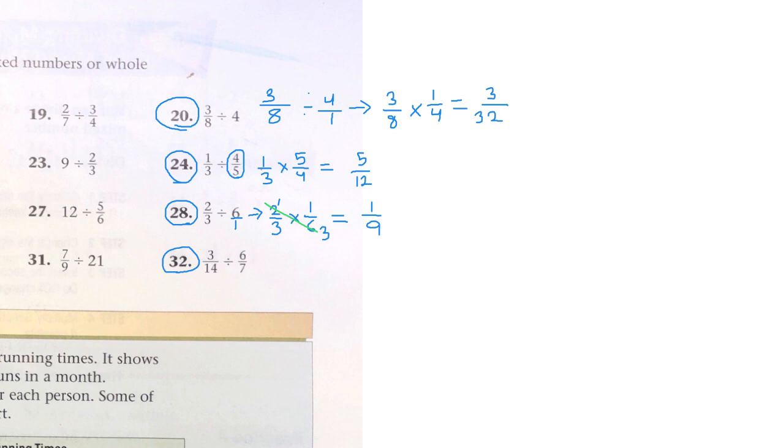One more. We again do not have a mixed number or a whole number. We have two fractions getting divided. So let's keep the first fraction the same. The division sign becomes multiplication. The second fraction gets inverted.